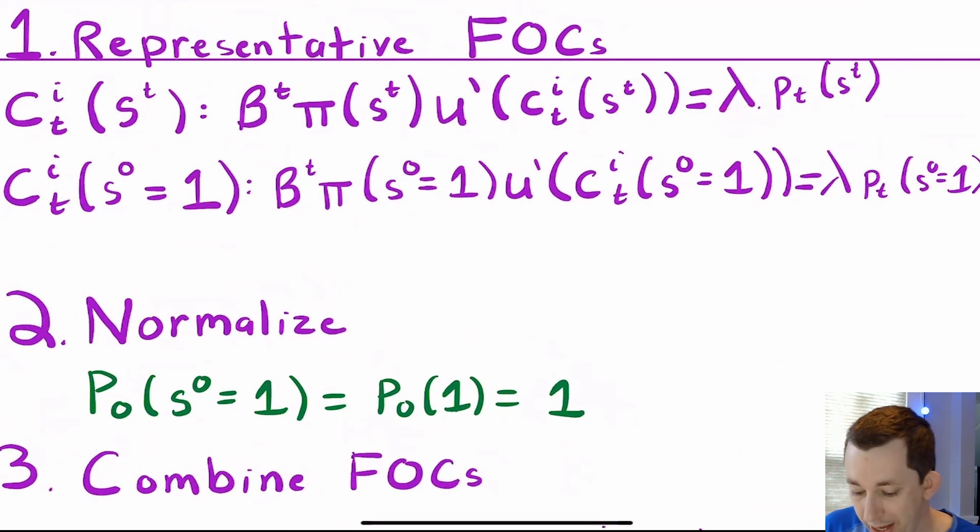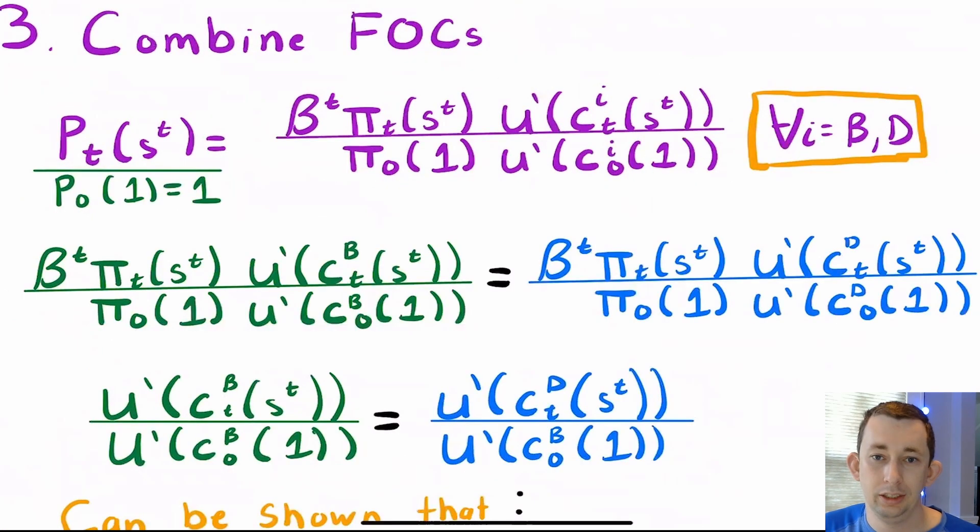So now we have a couple of variables and we're going to normalize. And what I mean by normalize is we're going to say, well, since all these prices are ratios, let's just set one of these prices equal to one and then the rest of the prices can be related to that normalized price. So let's just normalize the price of period zero of the event history zero when the period and time zero is sunny. So I'll just say p_0 of s^0 equals one. I'm just going to make that a little easier to read to say p_0 of one and that's just going to be equal to one and that's our normalization.